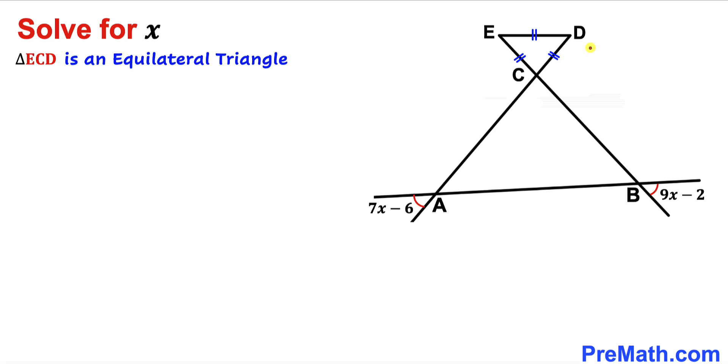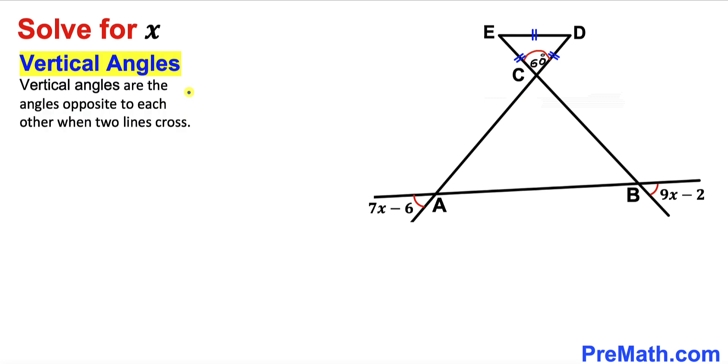Let's focus on this triangle E, C, D. We know that this is an equilateral triangle, so therefore all of its interior angles are going to be 60 degrees each. That means this angle is 60 degrees, this angle is 60 degrees, and likewise this angle is 60 degrees as well. Here's our next step.